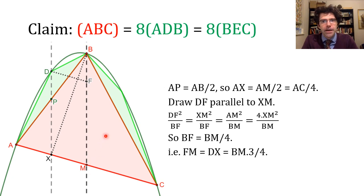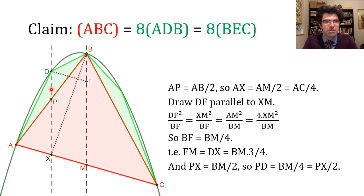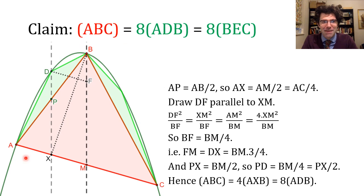We also know that PX, because of those similar triangles, is a half of BM. This allows us to make a relationship between PD and PX, and at this point we can put it all together and actually prove the result we're aiming for.